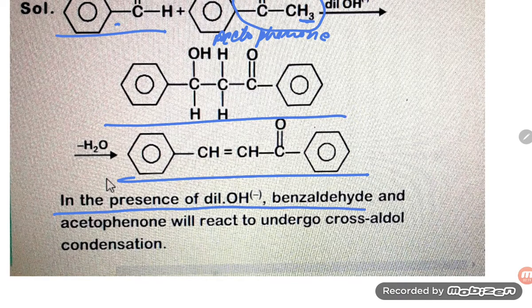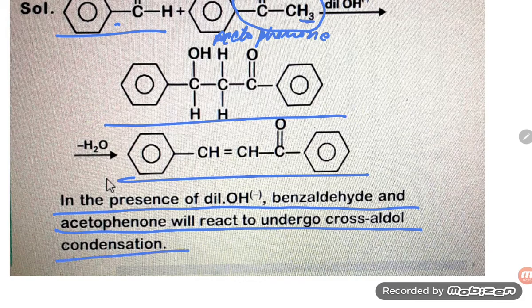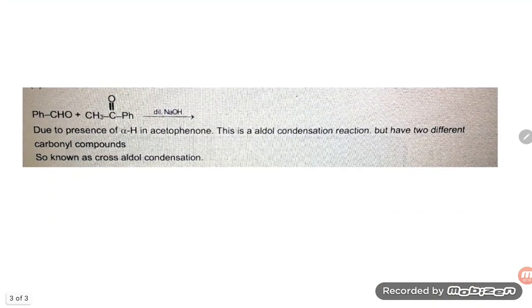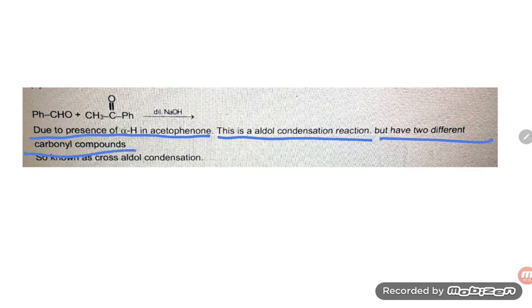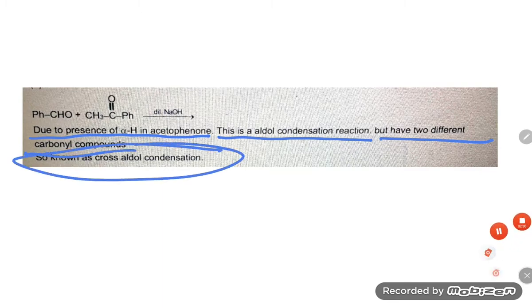So in the presence of dilute NaOH, benzaldehyde and acetophenone undergo cross aldol condensation. You can answer: due to the presence of alpha hydrogen in acetophenone, this is an aldol condensation reaction, but having two different carbonyl compounds, it is known as cross aldol condensation. Thank you so much for watching.